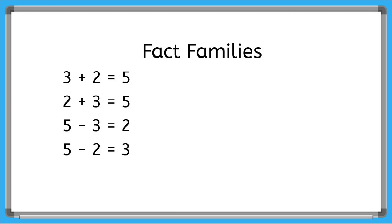Like with adding unknown numbers, we can use fact families to help us find the missing number in a subtraction problem as well. So look at this example fact family here on the left. I have 3 plus 2 equals 5, and 2 plus 3 equals 5. Then the sum becomes the first number of the last two subtraction problems: 5 minus 3 equals 2, and 5 minus 2 equals 3. Notice that in these two problems the numbers just switch places. This is what will help us.